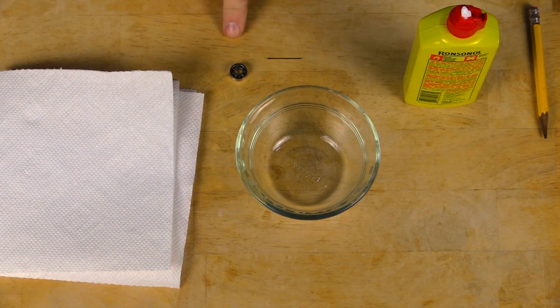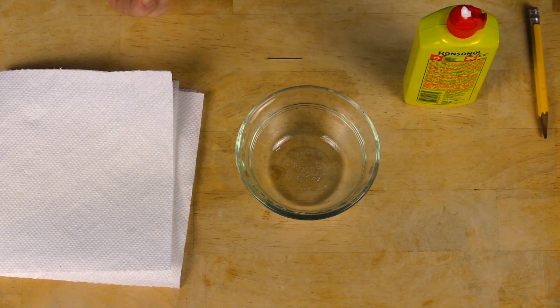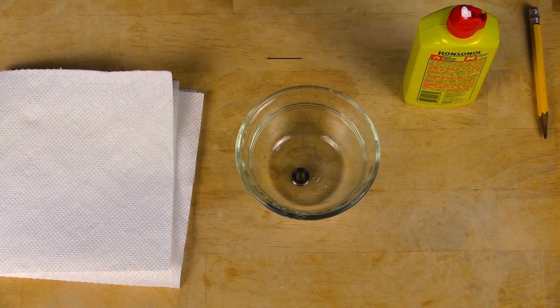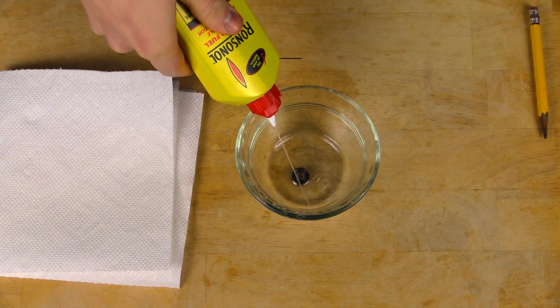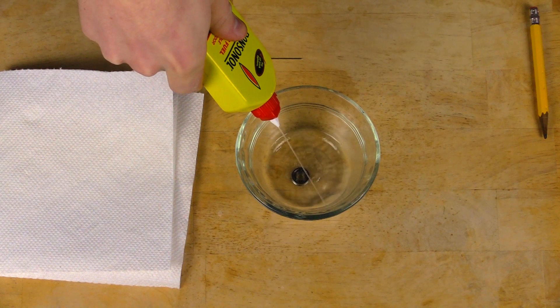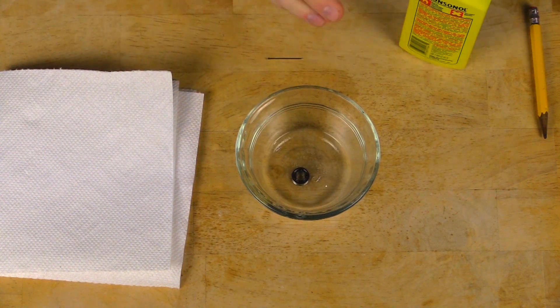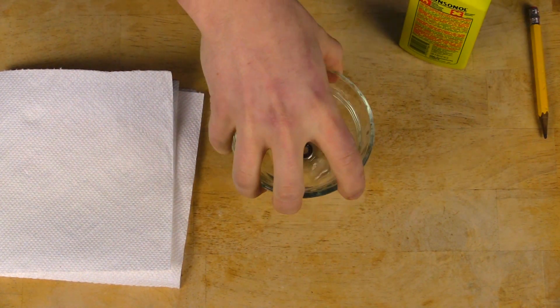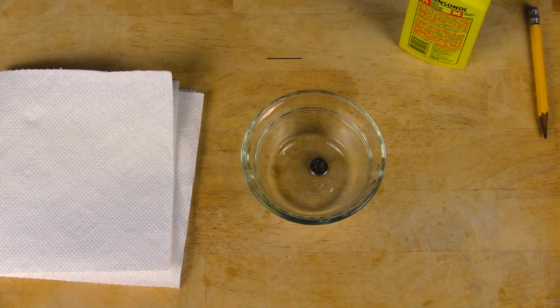So after you deshielded your bearing, the next step is to simply take the bearing, put it in the glass jar and then fill the glass jar with lighter fluid until the bearing is completely submerged. Once you've done that all you need to do is give the jar a little bit of a shake and then let it sit for about 5 to 15 minutes.